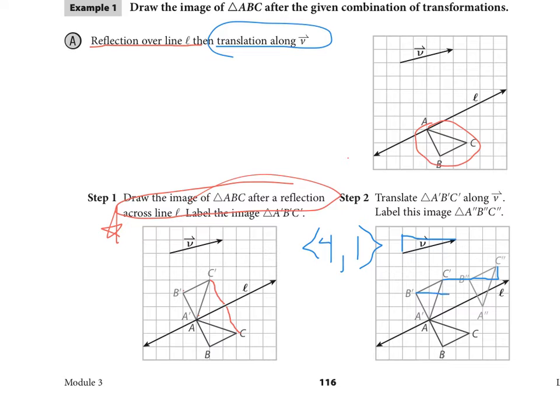B, 1, 2, 3, 4, and up 1. A, move to 1, 2, 3, 4, and up 1. And that is a combination of transformations. You just do one and then the other one.